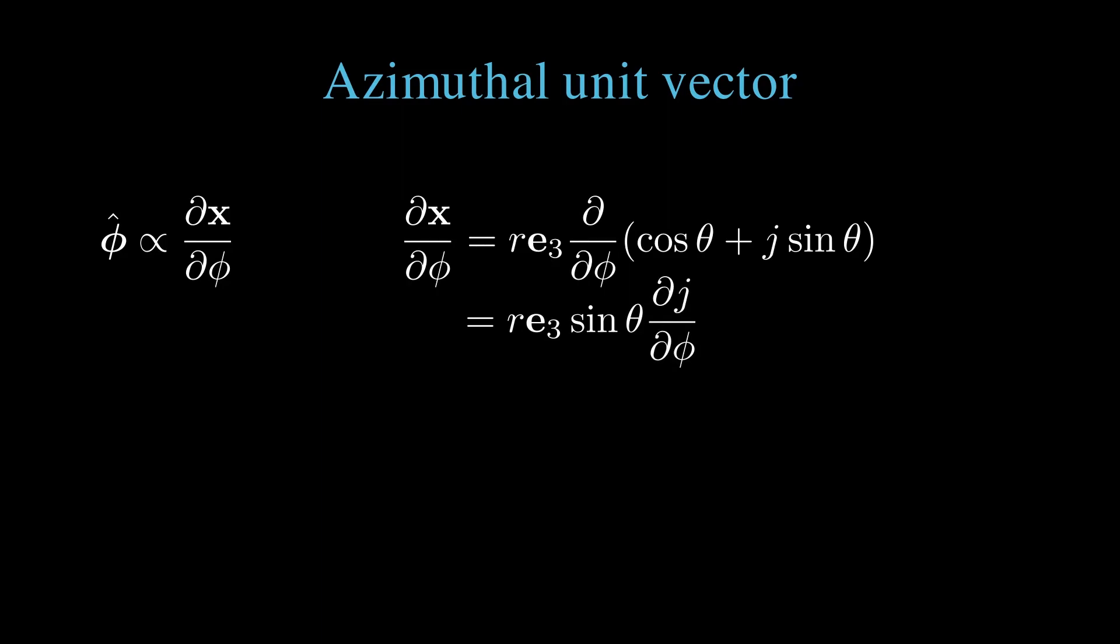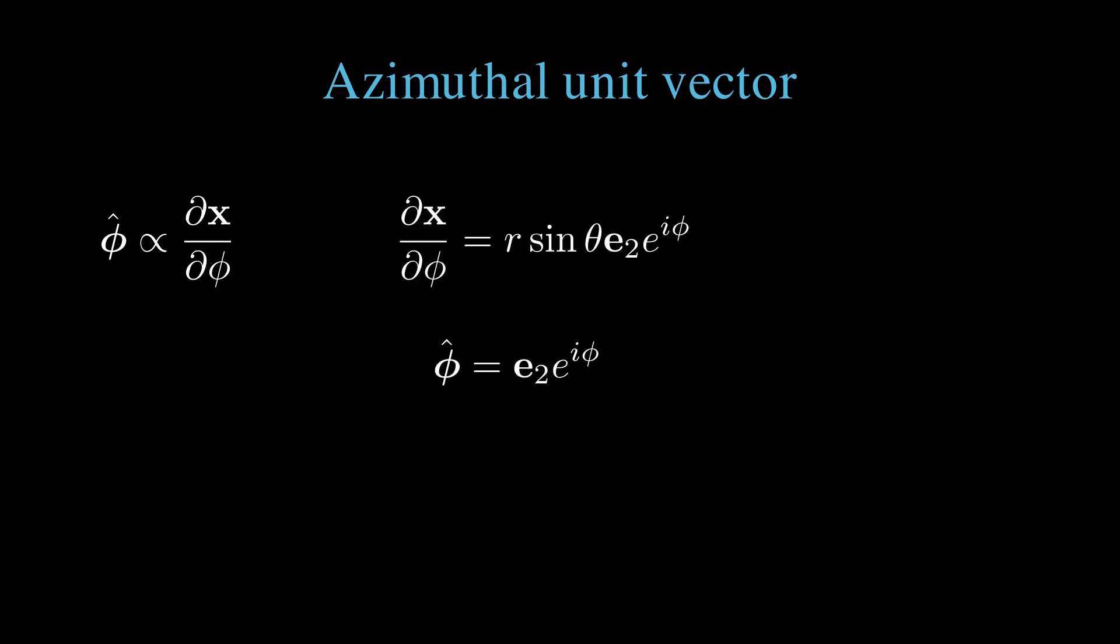Now we'll compute the azimuthal unit vector. This is phi hat, proportional to dx d phi. dx d phi is r e3 times the d d phi derivative of e to the j theta. We write out e to the j theta as cos theta plus j sin theta because all the phi dependence is in j. Taking derivatives, we're left with r e3 sin theta times d j d phi, which is r e3 sin theta e3 e1 i e to the i phi. The e3 products cancel, leaving e1 i, which is e1 times e1 times e2. The e1's cancel, leaving e2. We're left with r sin theta e2 e to the i phi. We want to rescale this to a unit vector, which means taking out the r sin theta term, leaving phi hat equals e2 e to the i phi.